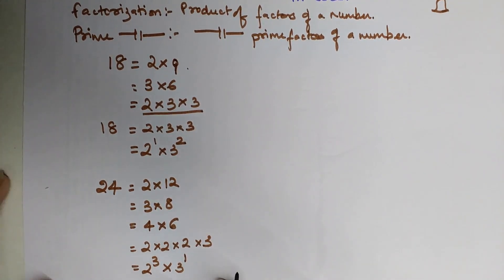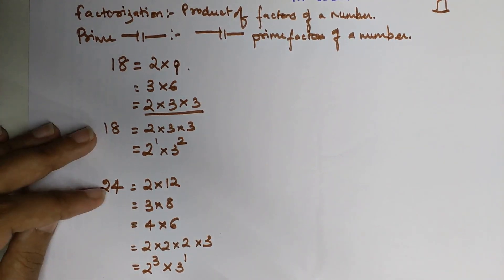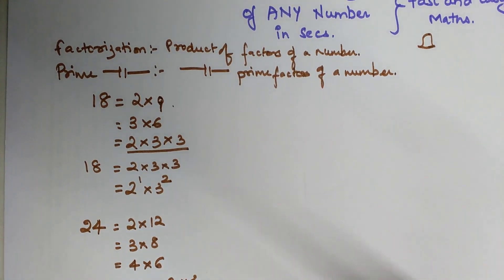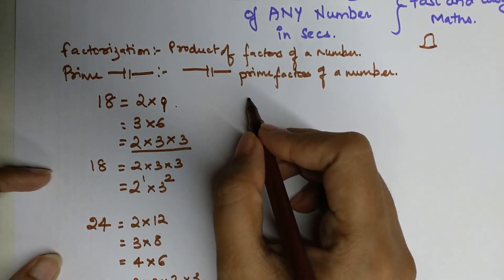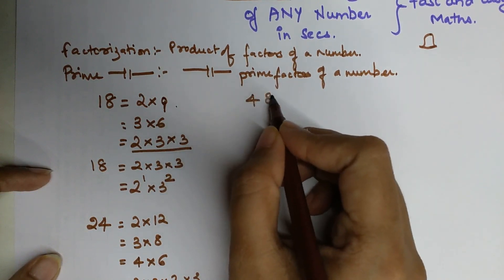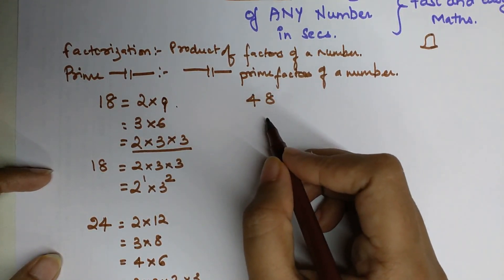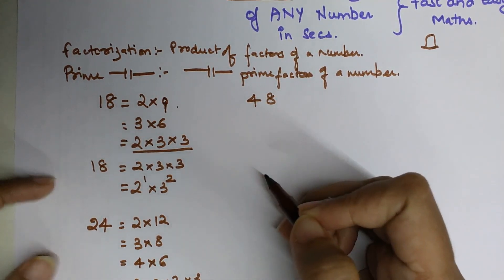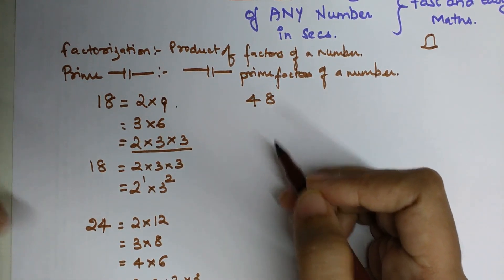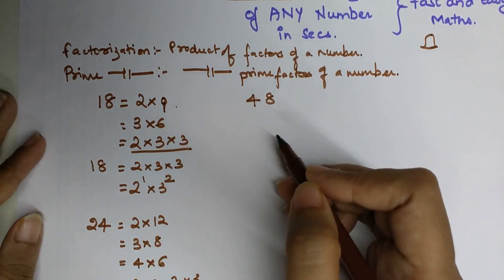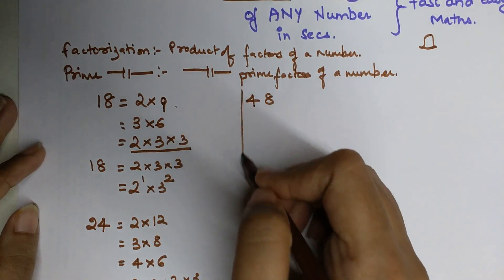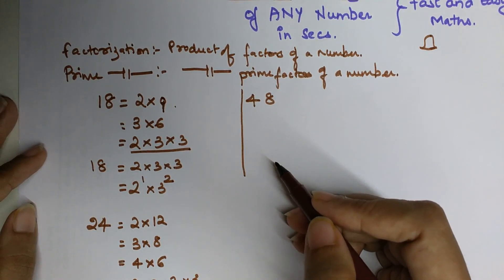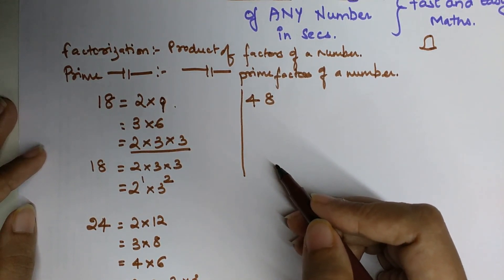This method is fine for small numbers, but what will happen when I give you a bigger number? Let's say, what will be the factorization of 48? The method I will be showing is very simple and you will never go wrong in finding prime factors of any number using it. If you like the way I am explaining, please hit the like button as that gives me a lot of encouragement to keep making these videos.